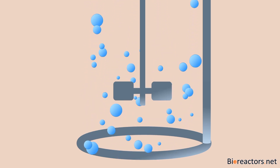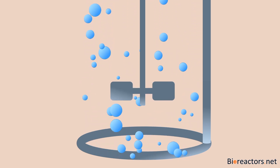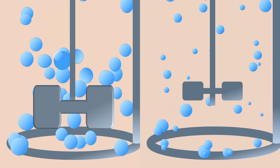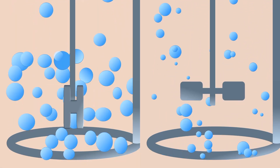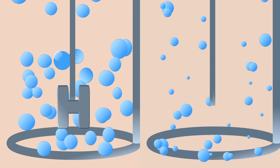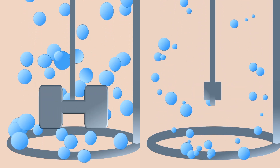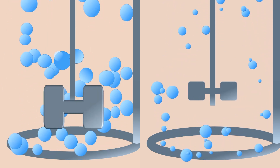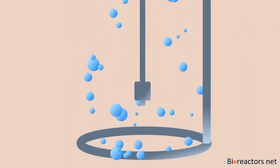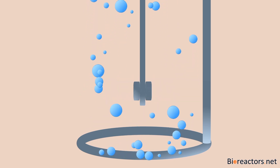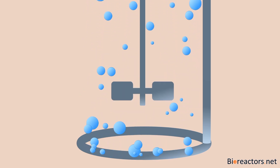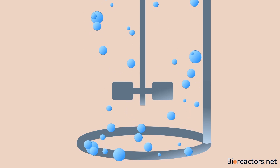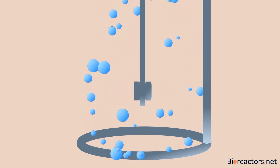KLA can be significantly influenced by both sparger geometry and agitator geometry. For example, increasing the orifice size of the sparger produces bubbles of significantly larger size, which decreases the contact area between the gas phase and the liquid phase — thus KLA values drop. On the other hand, reducing the orifice size produces smaller bubbles, increasing total contact area between gas and liquid, and KLA also increases.